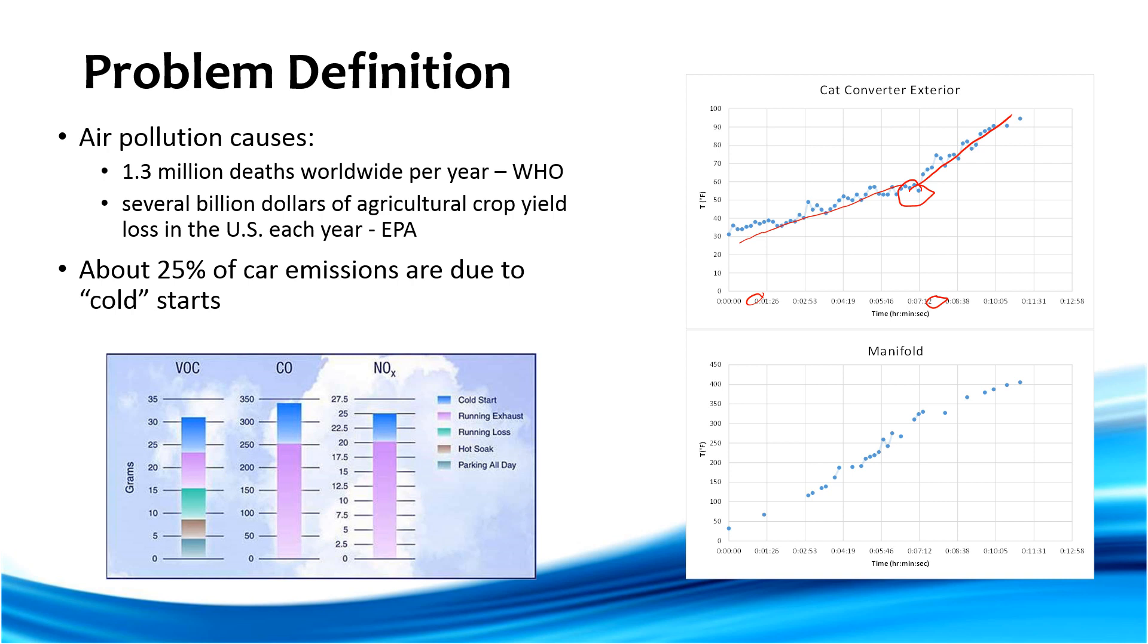So air pollution every year kills 1.3 million people worldwide, and also causes several billion dollars in crop loss damages just in the U.S. And so about 25% of car emissions are actually due to cold starts.